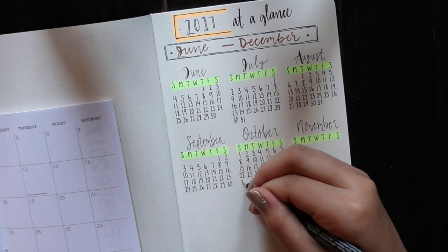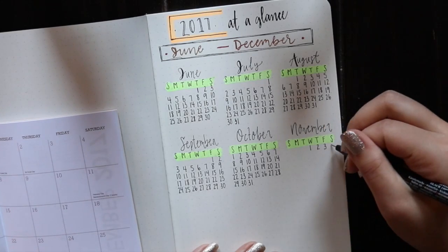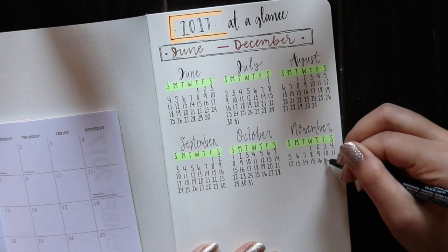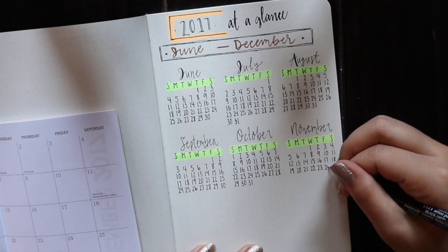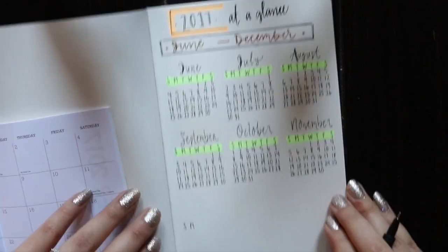I have my planner that I'm using somewhat as a straight edge and also for reference just so I get my days correct. I'm just kind of grabbing anything as a straight edge and it's working fine.